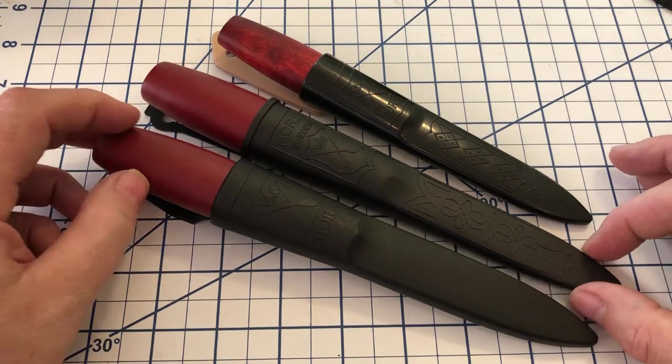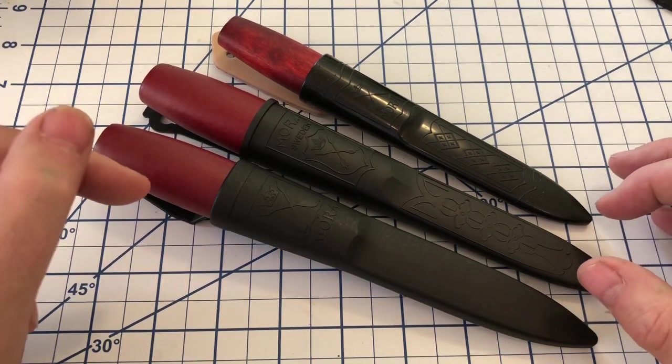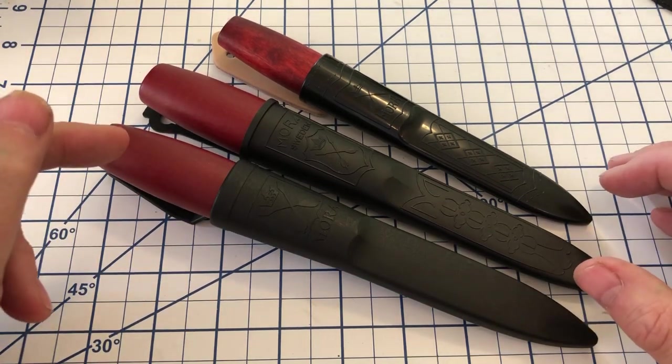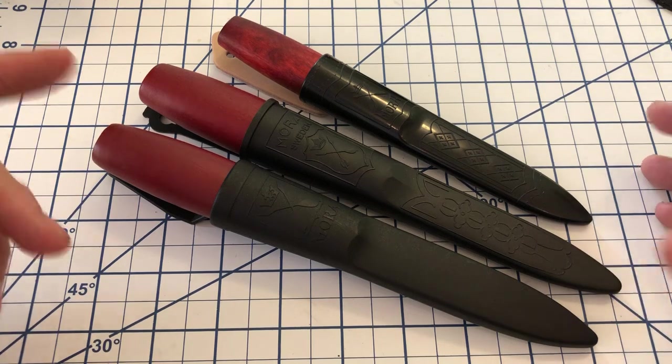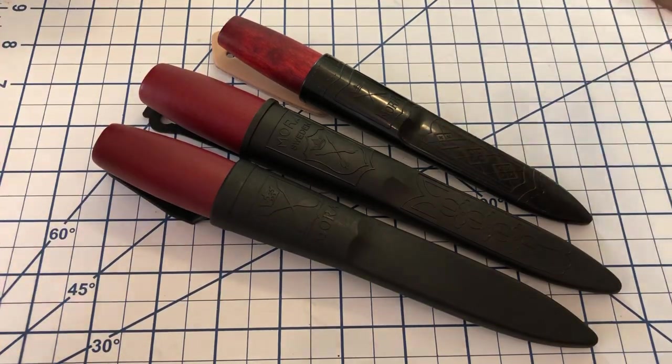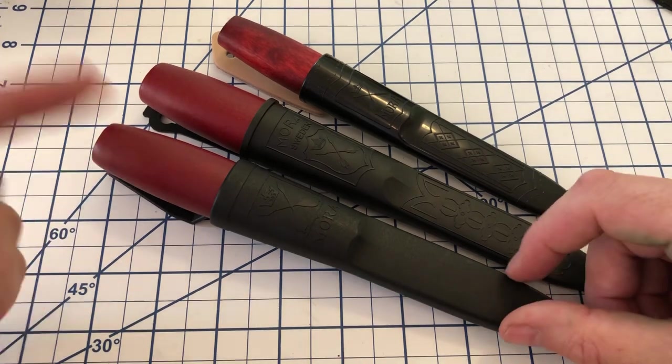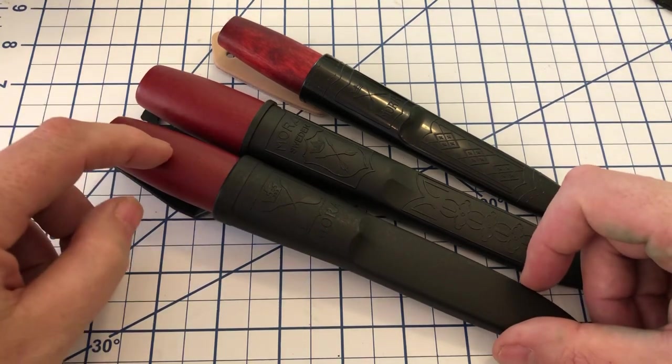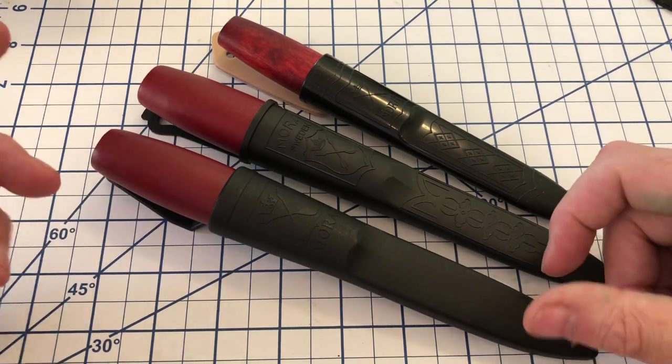They started making these with the wood handles. The wood was originally scrapped from making timber sleds, the big sleds that they would go in, cut down trees, put those trees on, and haul them out of the forest. Well, there'd be scrap wood left over, and they used it for this. And originally, that was birch wood.